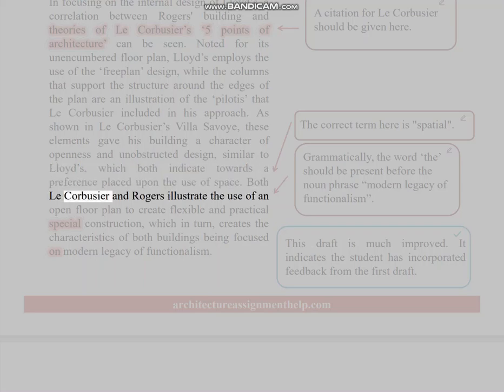Both Le Corbusier and Rogers illustrate the use of an open floor plan to create flexible and practical spatial construction, which in turn creates the characteristics of both buildings being focused on modern legacy of functionalism. Grammatically, the word 'the' should be present before the noun phrase 'modern legacy of functionalism.' This draft is much improved. It indicates the student has incorporated feedback from the first draft.